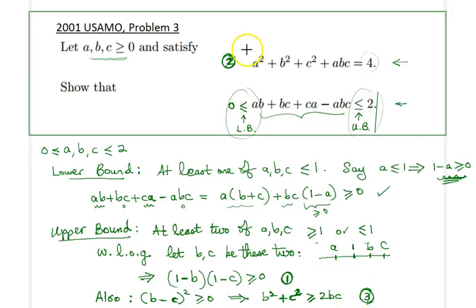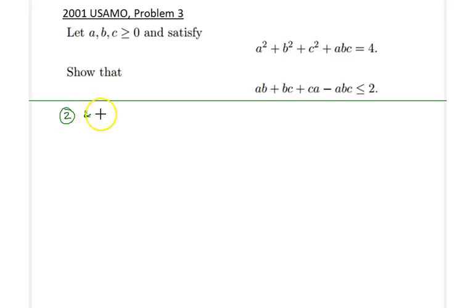Let me go ahead and combine 2 and 3 to start manipulating these expressions. So 2 and 3 would imply that a² plus 2bc, I'm replacing b² + c² with 2bc plus abc. Obviously, b² + c² is greater than 2bc, therefore we're making this whole left-hand side less than or equal to 4.